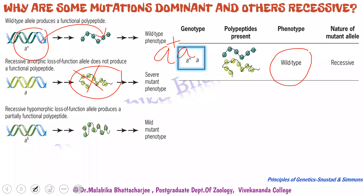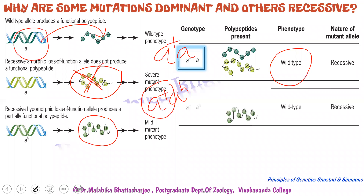In the first case there was no functioning polypeptide, but in the second case — the second mutant AH — it is producing a partially functional polypeptide. When we have a combination of A-plus AH, A-plus is sufficient to carry out the function. So in most cases, what we see is the wild type phenotype. The difference between these two sets of mutant alleles is that one allele produces a totally non-functional enzyme, whereas the second allele produces a partially functional polypeptide.